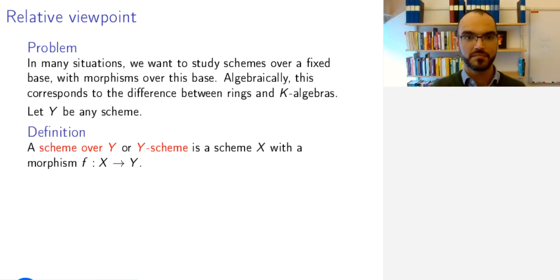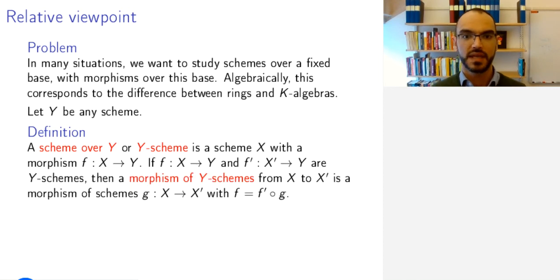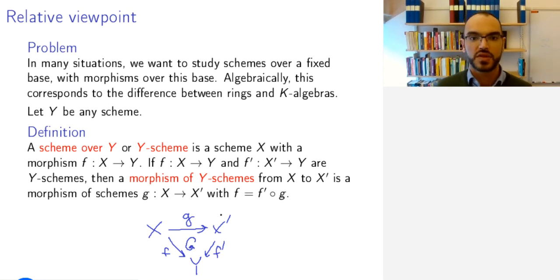So, let Y be a scheme. A scheme over Y, or a Y scheme, is a scheme with a morphism from X to Y. And if X and X' are two such schemes over Y, then the morphism of Y schemes from X to X' is a morphism that is compatible with these structure maps. So, we have X here with its structure map F down to Y, and X' with its structure map F' down to Y. And we want G to be a morphism of schemes that, in addition, makes this diagram commute. Note that we sometimes write X for the scheme X over Y, and sometimes explicitly write F from X to Y. This will depend on the context, whether we need this or not.